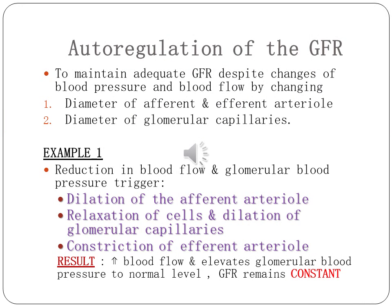When there is a change in blood pressure and blood flow, there will be a change in GFR. But by changing the diameter of afferent and efferent arterioles and the diameter of glomerular capillaries, GFR can be maintained. For example, a reduction in blood flow and glomerular blood pressure will trigger dilation of the afferent arteriole, relaxation of cells and dilation of glomerular capillaries, and constriction of the efferent arteriole. These three effects bring up blood flow and elevate glomerular blood pressure to a normal level, so GFR will remain constant.